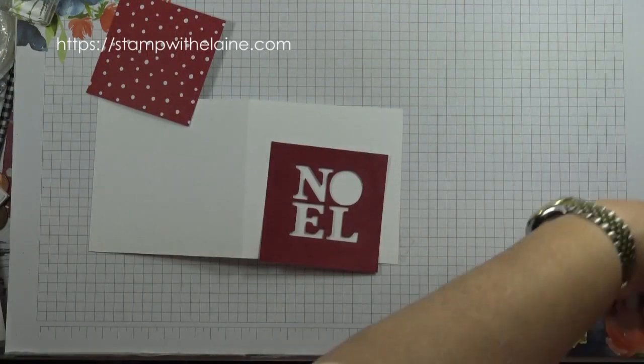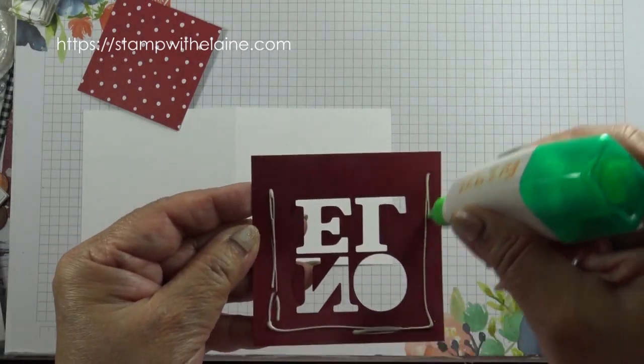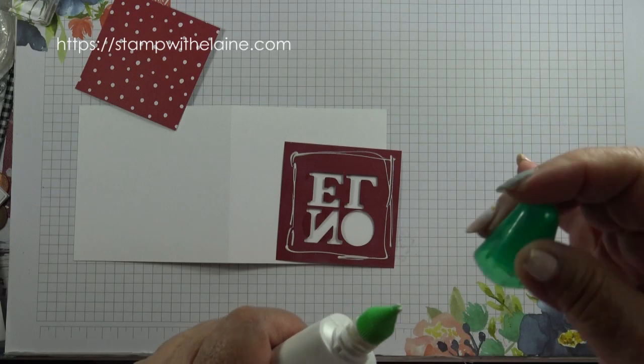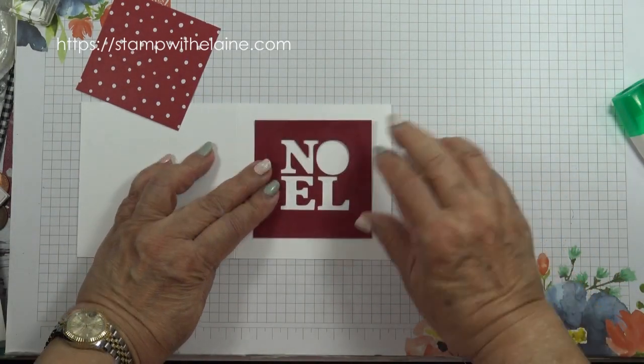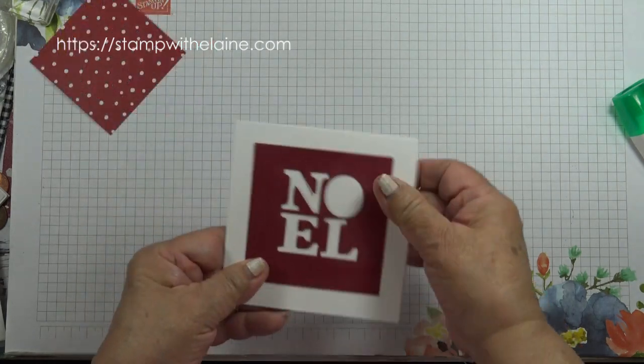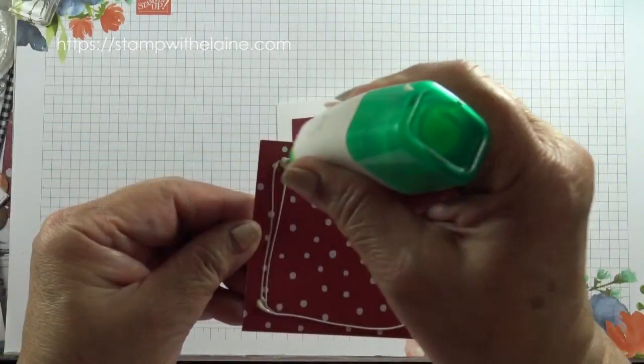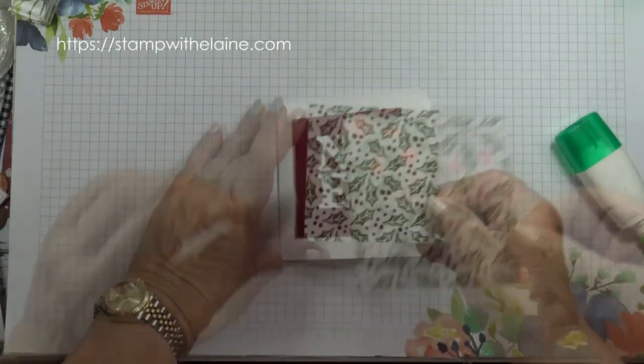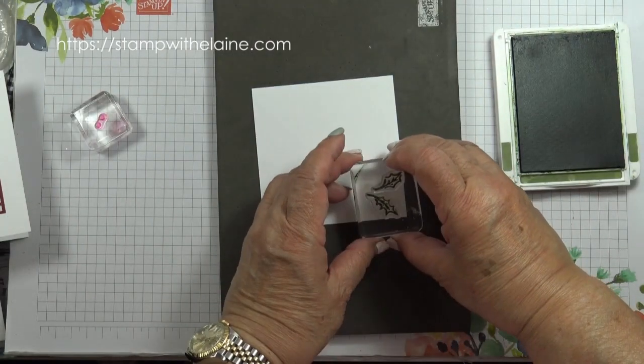Now that I've die cut the letters, I shall glue this to the card base for the square card, leaving an even border all round. Next, glue on the pretty paper and stamp the leaf in mossy meadow.